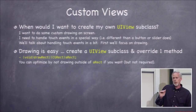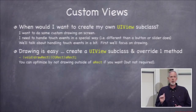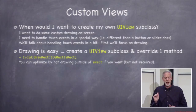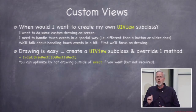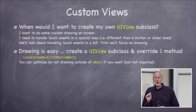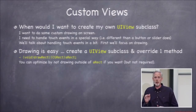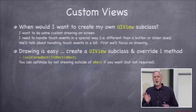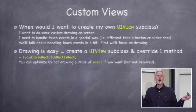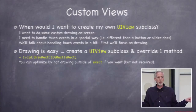The rect argument to drawRect is a performance optimization. It's basically a rectangle that says: please draw yourself, but I only need the stuff inside this rectangle in your coordinate system. If you want to ignore this rectangle and draw all of yourself, that's fine. It's purely a performance hint.